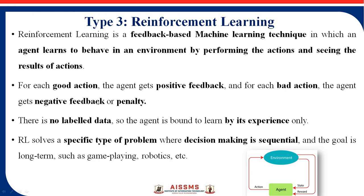In reinforcement learning, there are different actions. For each good action, the agent gets a positive feedback, and for each bad action, the agent gets a negative feedback or penalty. There is no labeled data — the agent learns by its own experience only. In supervised and unsupervised learning, we use labeled and unlabeled datasets, but in reinforcement learning, the agent learns through each decision and experience. It solves problems where decision-making is sequential.